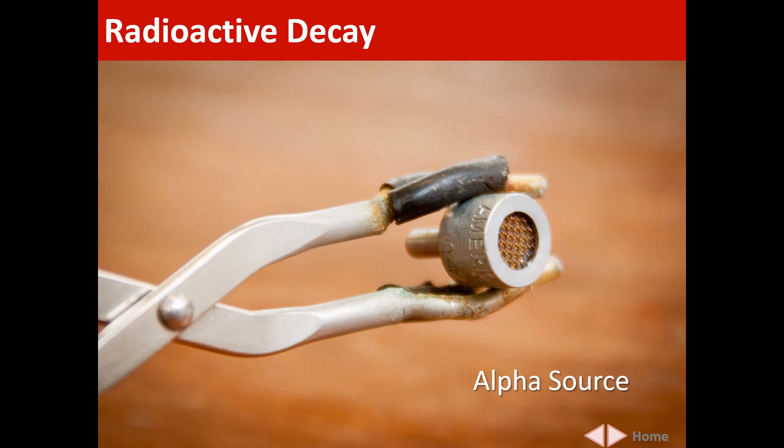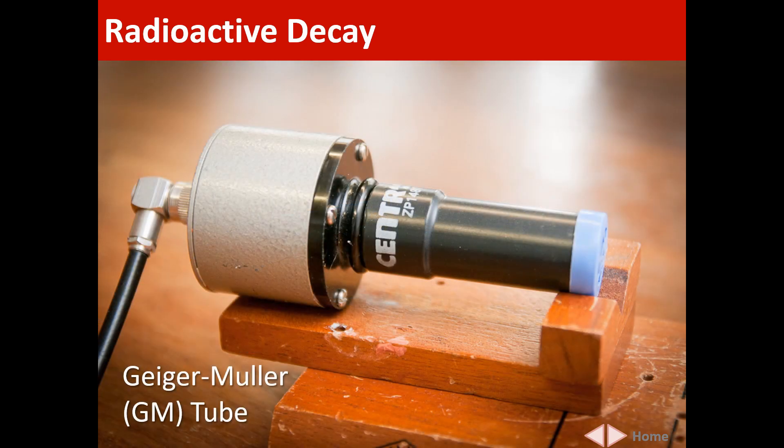This is a sealed cup source — in this case containing americium-241, which is an alpha emitter, stored in a little pot with a little bit of foil. This is a Geiger-Müller tube that we use to detect ionizing radiation. The ionizing radiation moves into it, a small current is produced, and that's attached to a counter which counts up the number of ionizations.